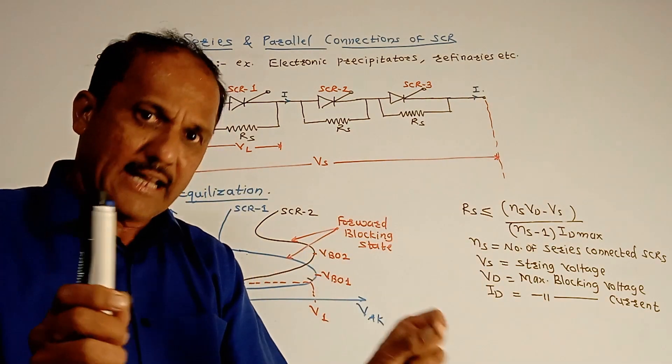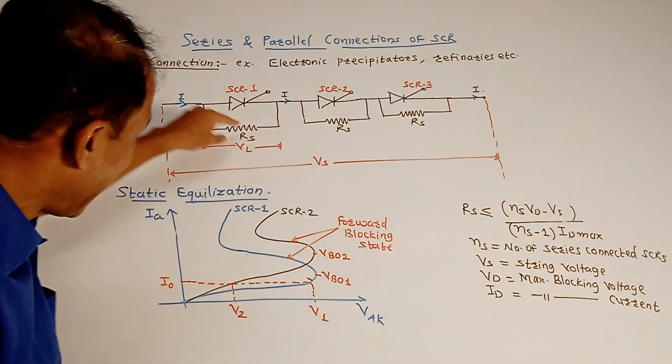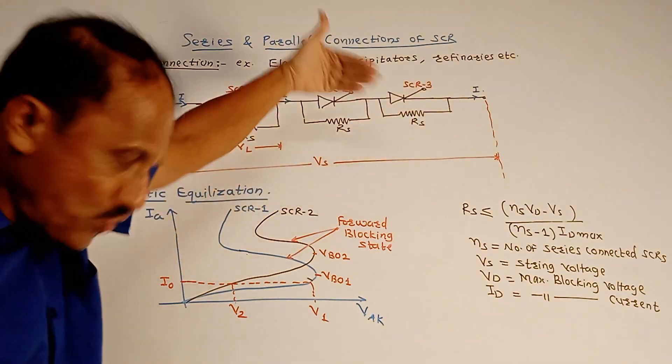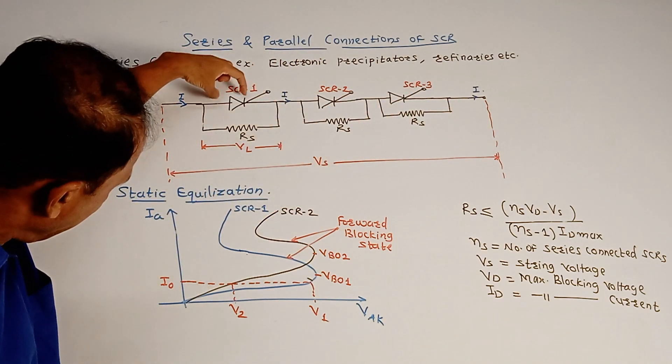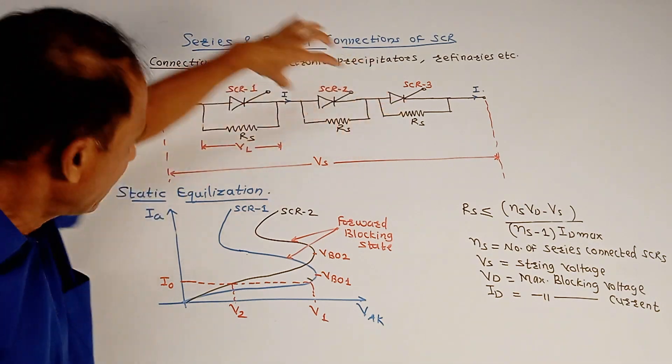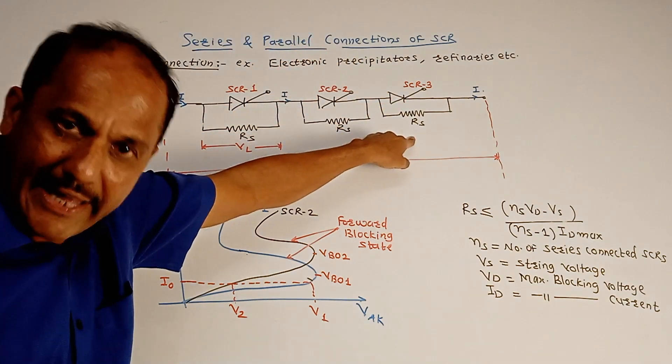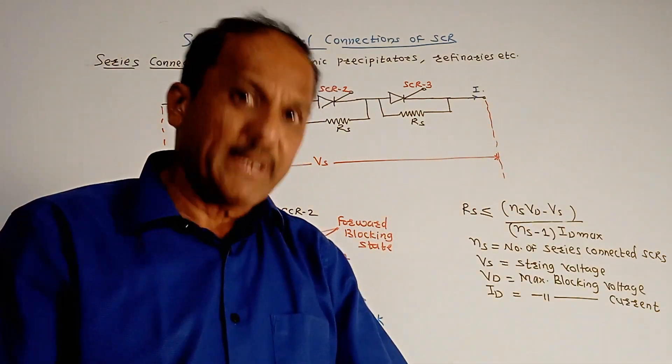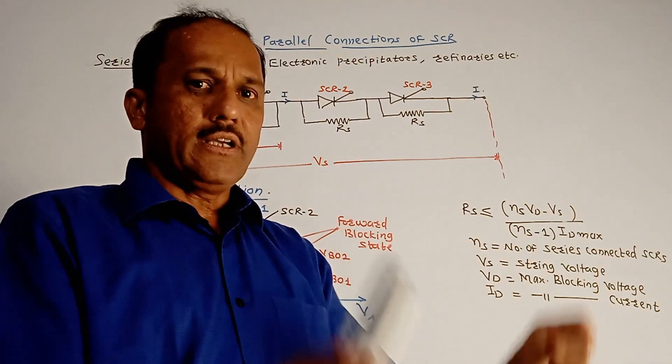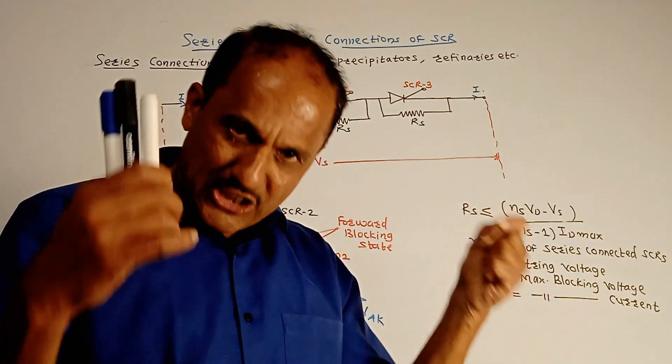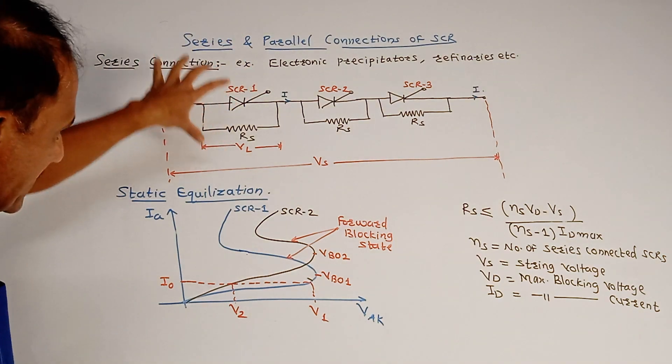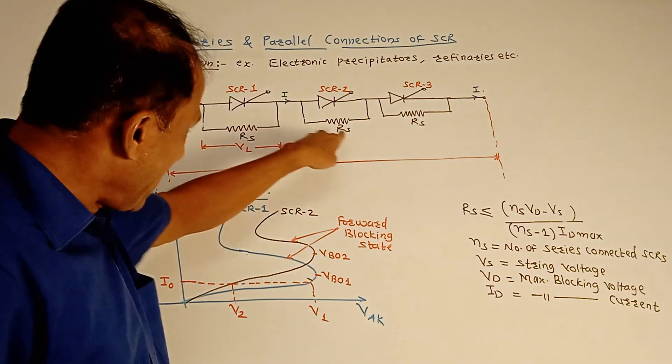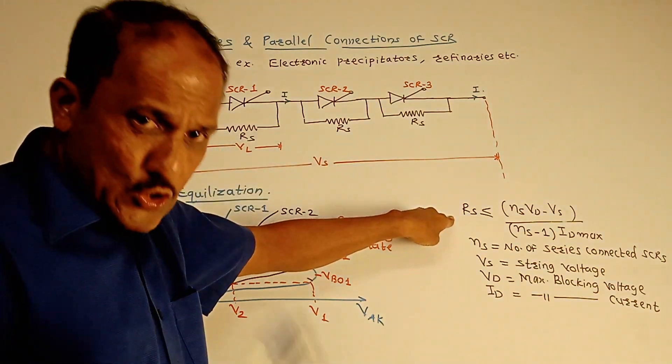To obtain the same voltage across SCR under static conditions, as shown in this diagram, we have connected resistance Rs across each SCR, which is called voltage or static equalization circuit.